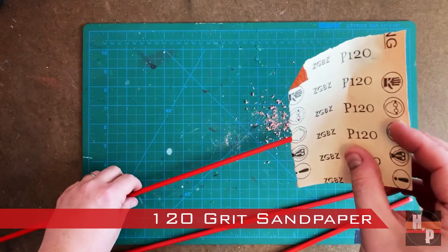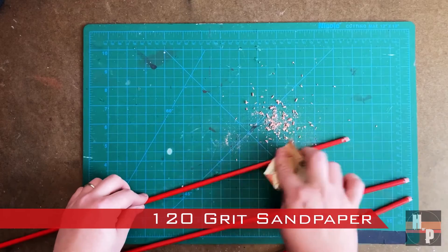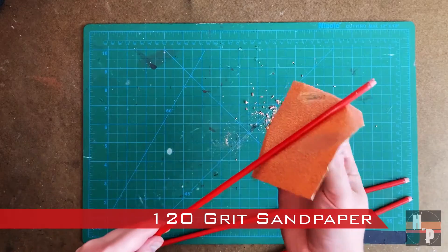Next, I roughed up each of the arrow rods with a piece of 120 grit sandpaper. This will help the paint adhere to the rod.